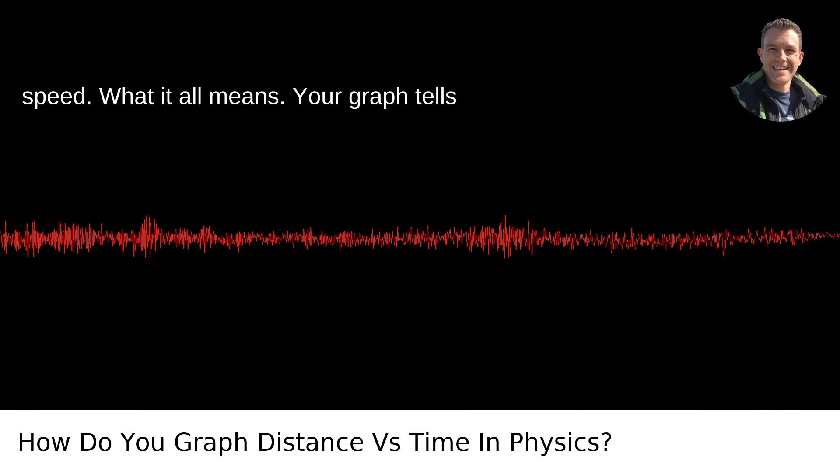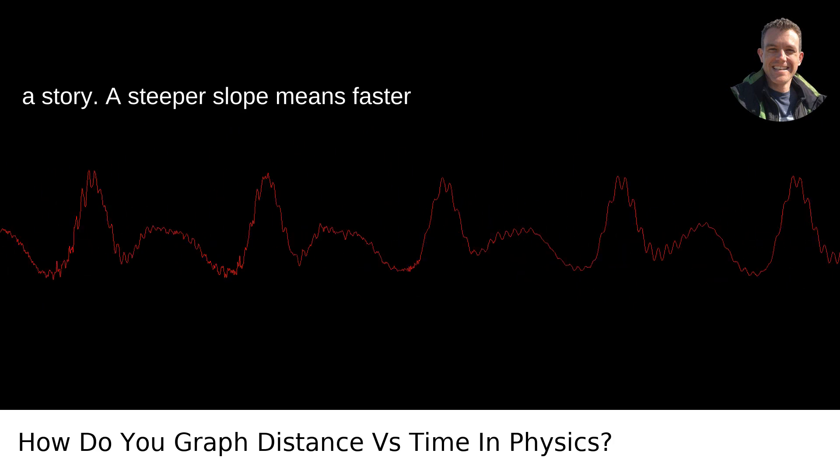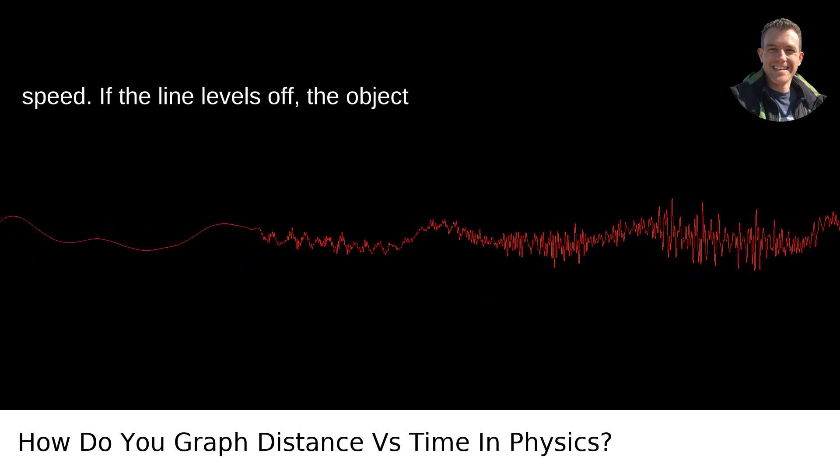What it all means: Your graph tells a story. A steeper slope means faster speed. If the line levels off, the object is stopping.